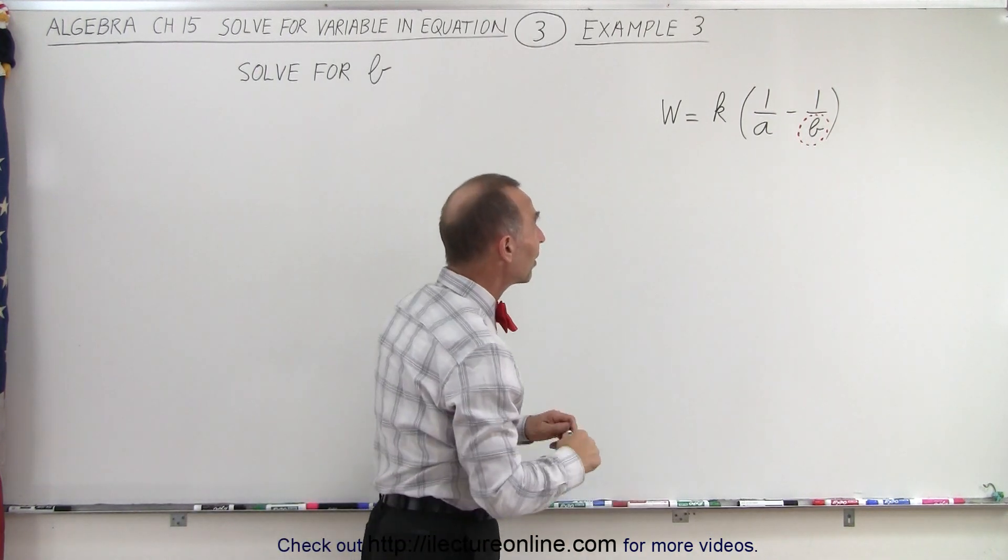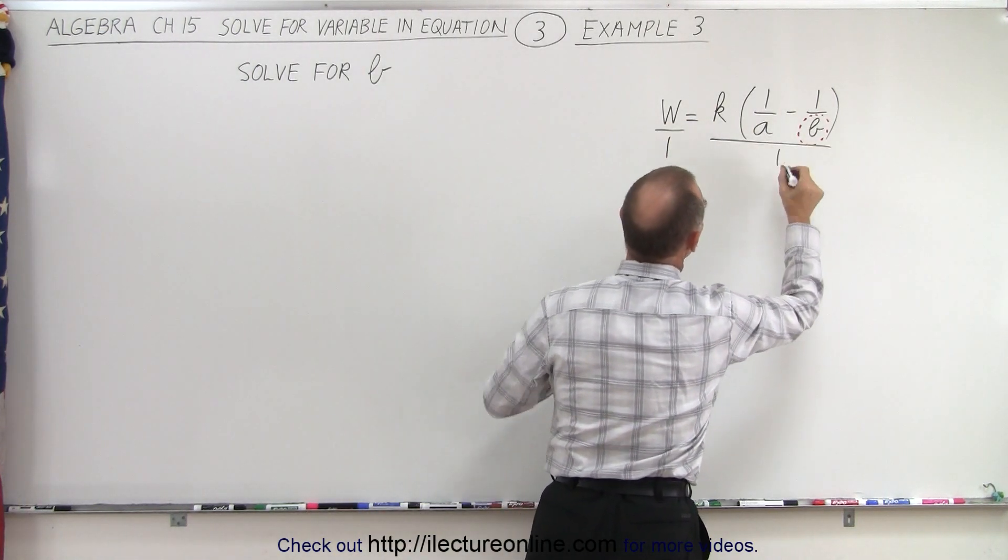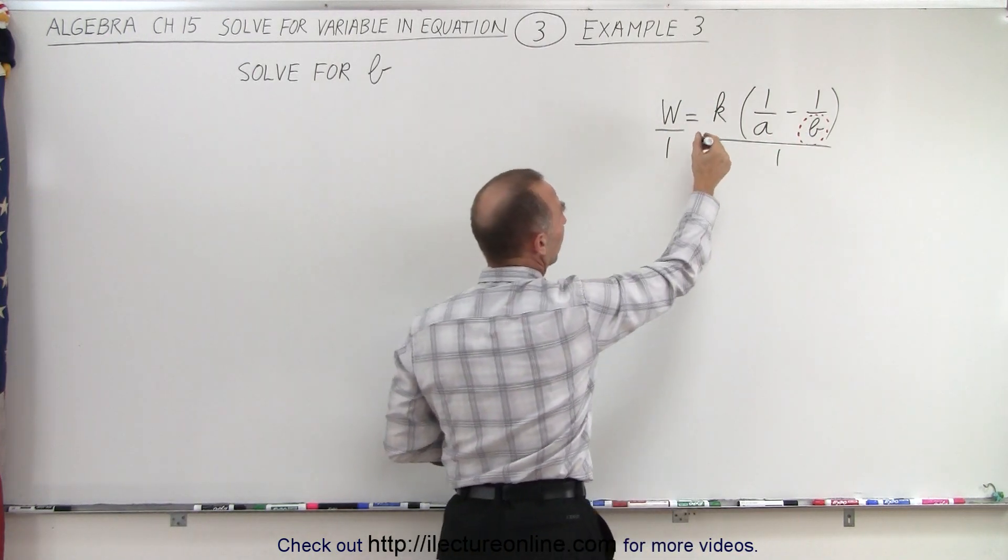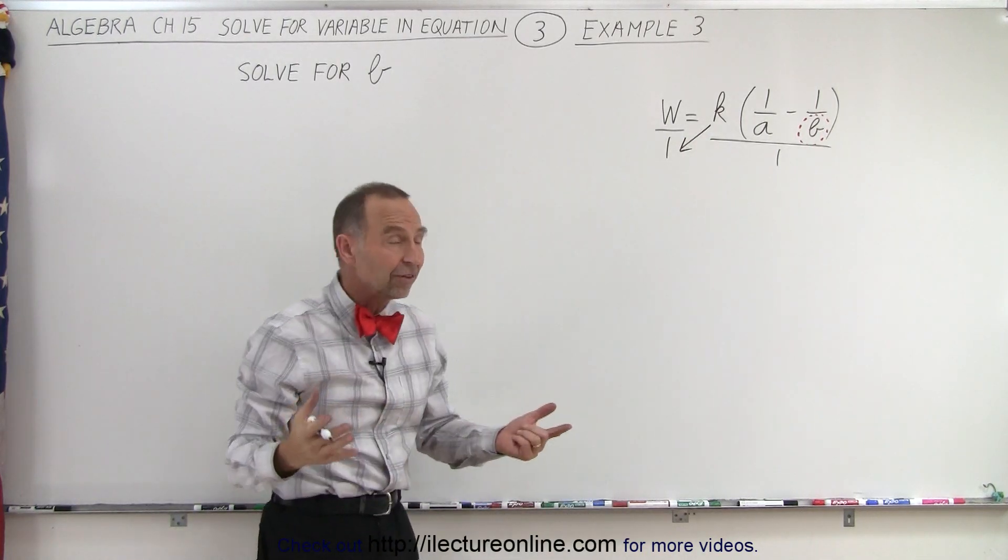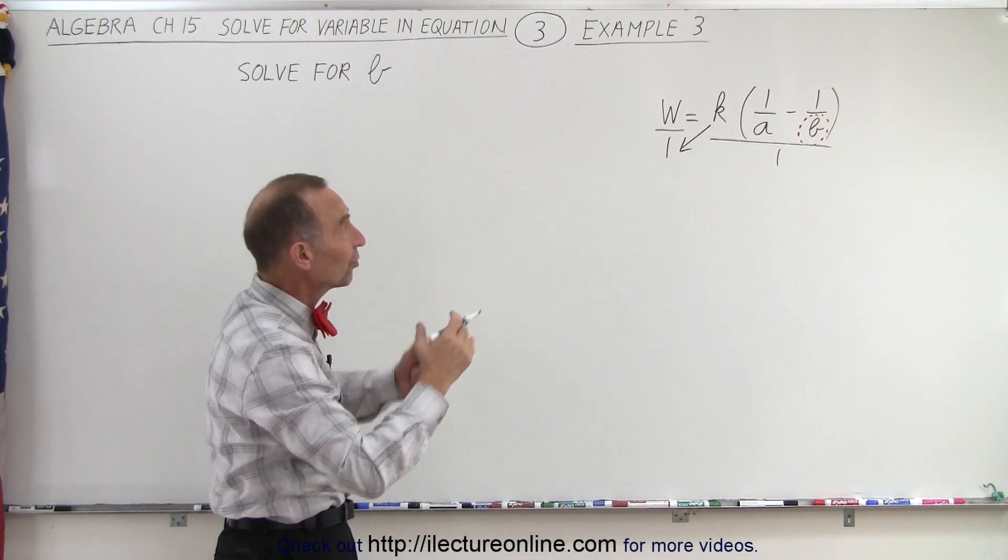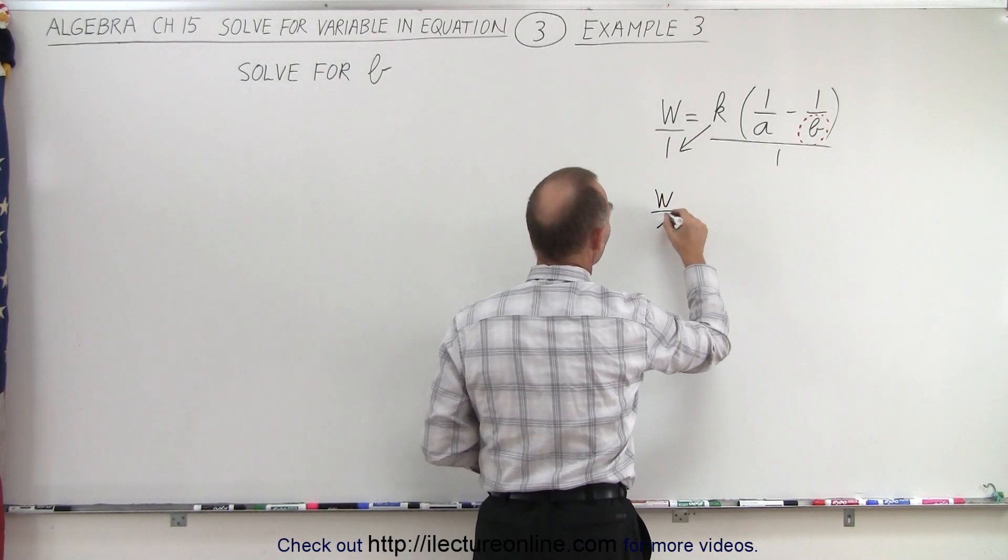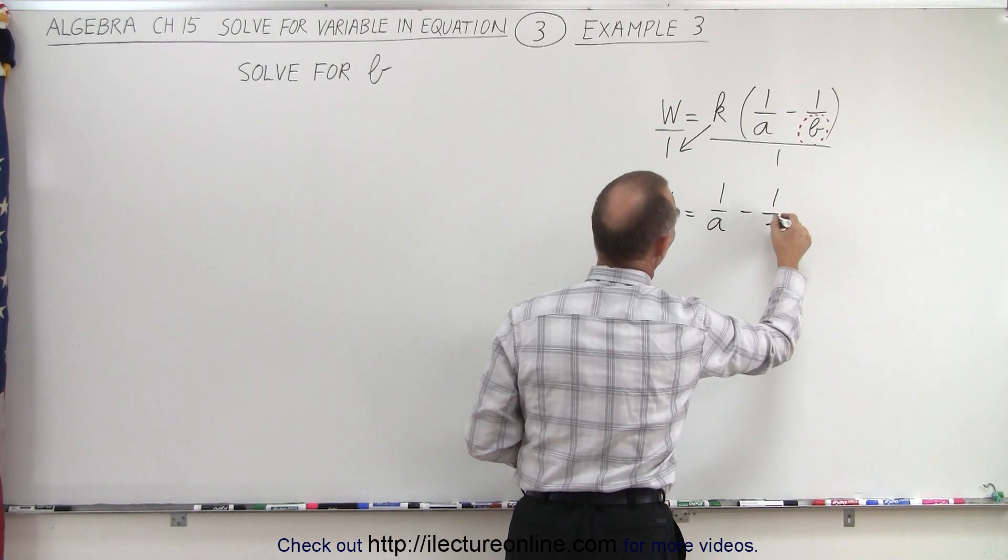Well, we might recognize that we could write this as w over 1 and the right side all over 1. So we have two fractions again and we can move things across the diagonal. In other words, we can move the k across the diagonal this way, which in essence is the same thing as dividing both sides by k. Which means we end up with w divided by k equals 1 over a minus 1 over b.